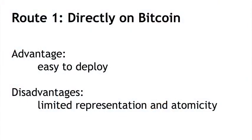The first one, sort of the obvious default, is to directly use the Bitcoin blockchain itself. This is the one we saw in the smart property example as we walked through the steps. The advantage is that it's easy to deploy — the blockchain is here, it has all this mining power behind it, so we know it's very secure and the consensus process cannot be easily disrupted.